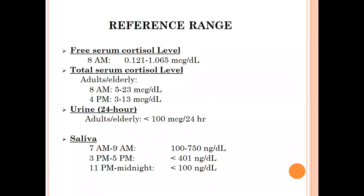A critical point in diagnosis: in Cushing syndrome, the diurnal variation — the circadian rhythm of cortisol — is lost. This is the most important point in diagnosis. Samples must be taken at proper times; sometimes the first step is to check the midnight level, which is normally low, and if that is elevated it provides a clue that the patient is suffering from hypercortisolism.